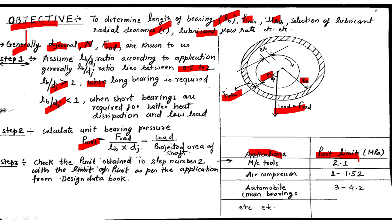If the calculated unit bearing pressure is greater than the value shown in the table for the given application, go back to step number one, assume a greater L/D ratio, recalculate the unit bearing pressure, and check again. Repeat until the value lies within the specified range. For example, for a machine tool application, the unit bearing pressure must lie between 1 to 2 MPa.